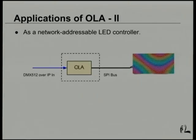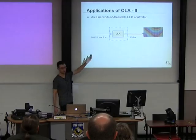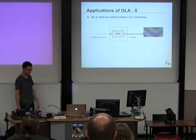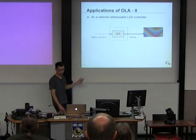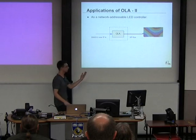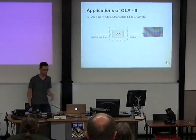The second application is as an SPI controller. This was essentially unheard of about two years ago, then the Raspberry Pi came out with an SPI output. Since OLA already implements DMX over IP protocols, we just added an SPI plugin and now you can control pixel walls. This has seen a lot of use in the last year, and people are making all sorts of cool projects based on it.